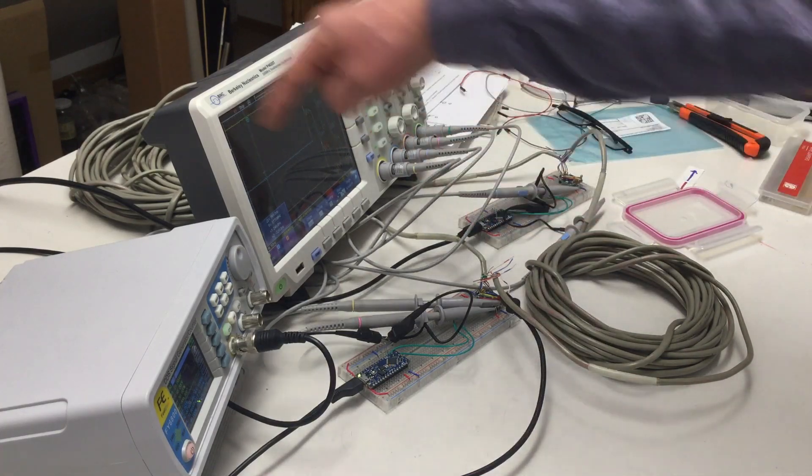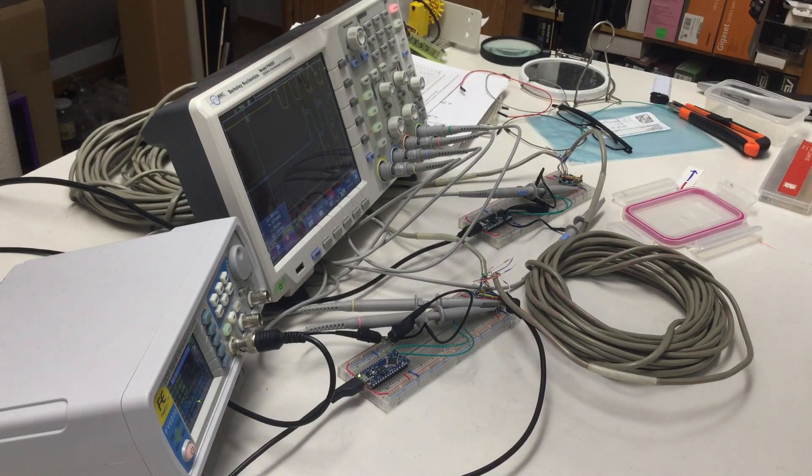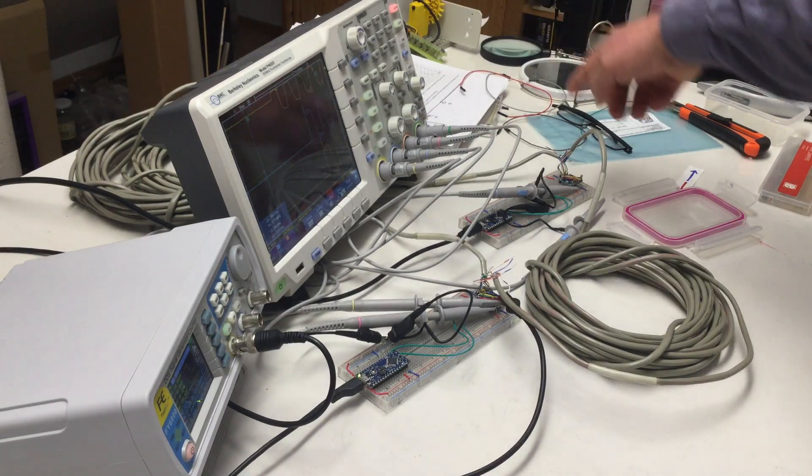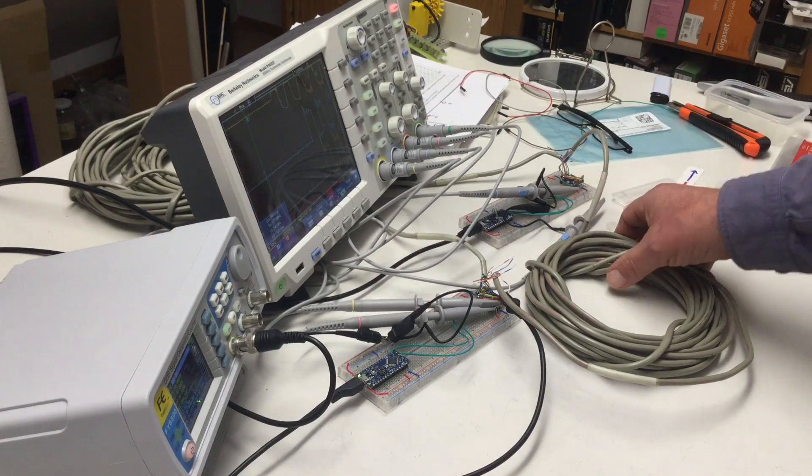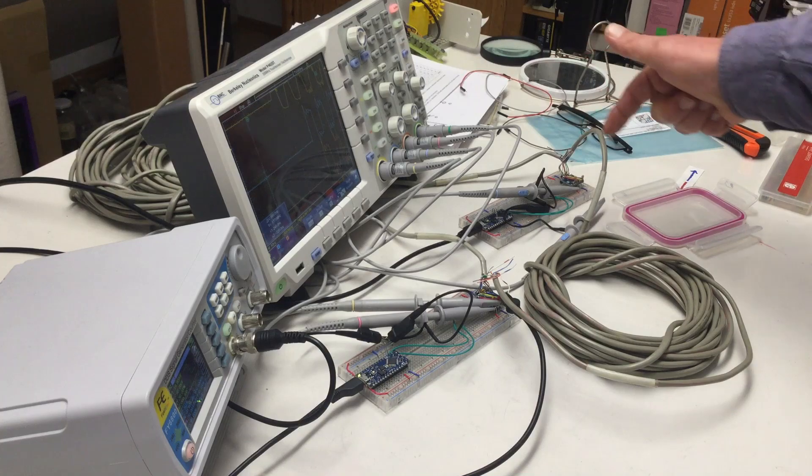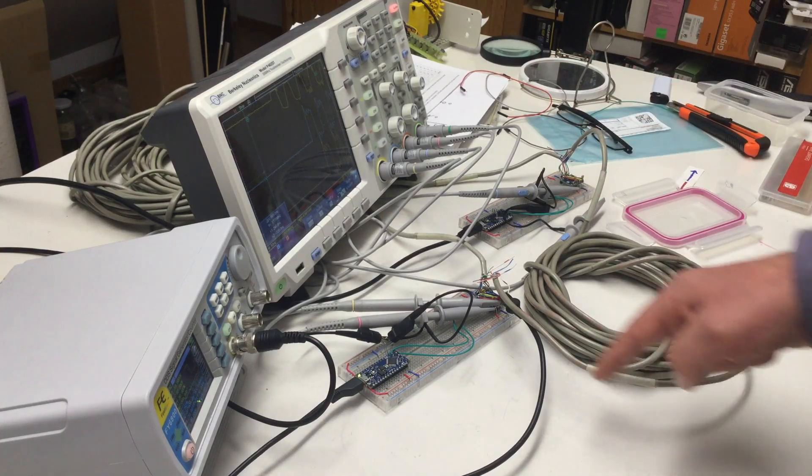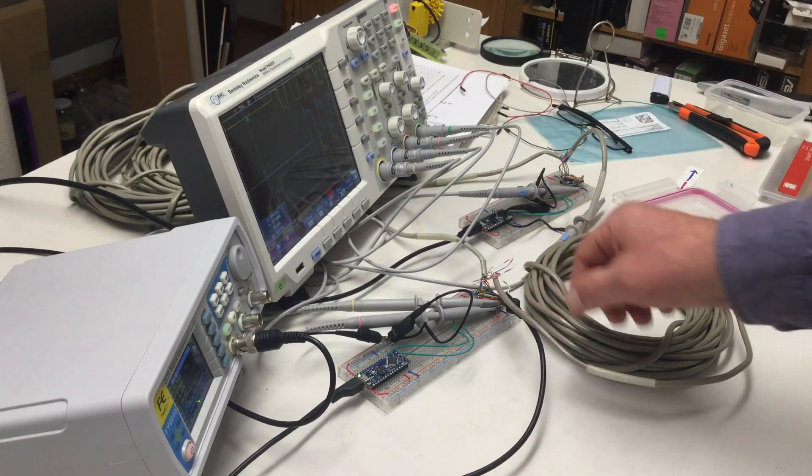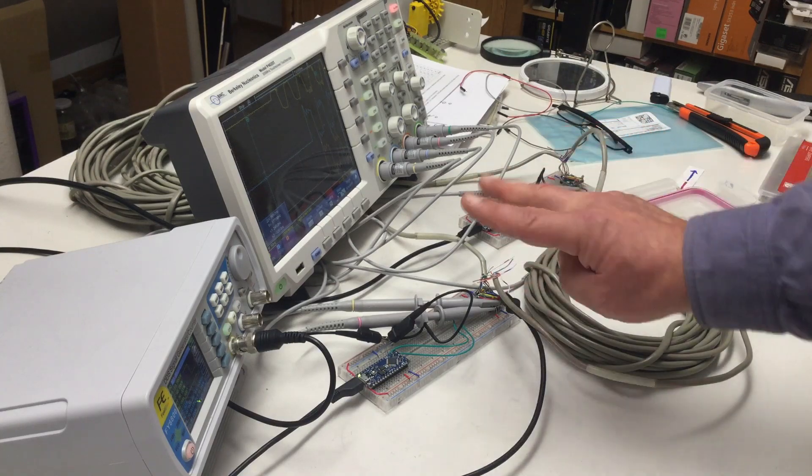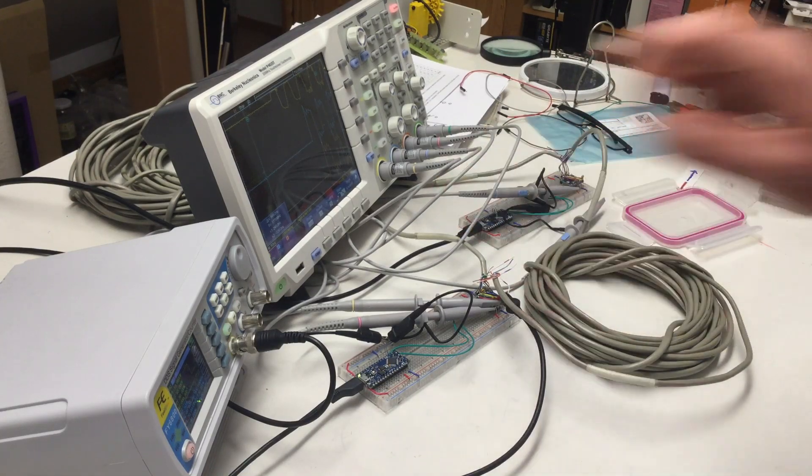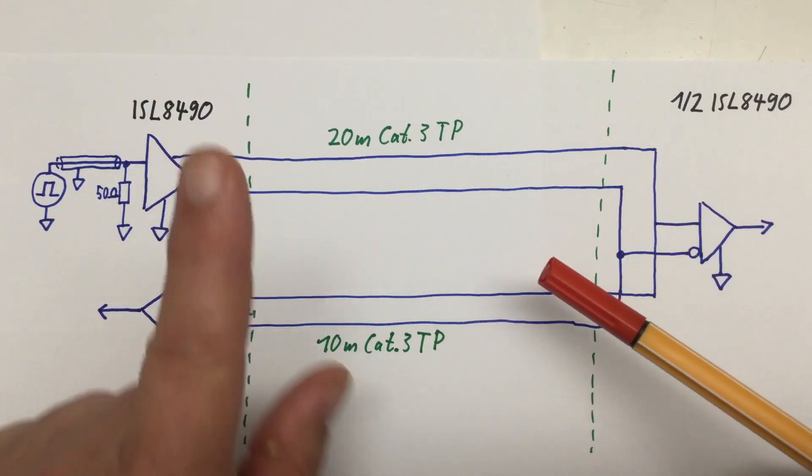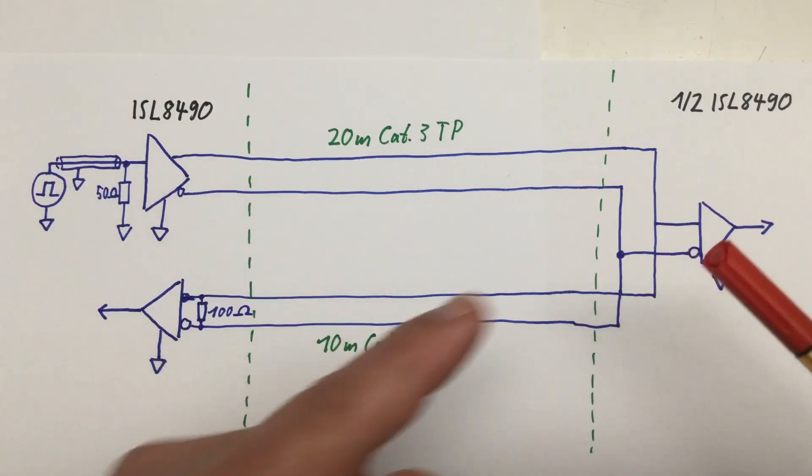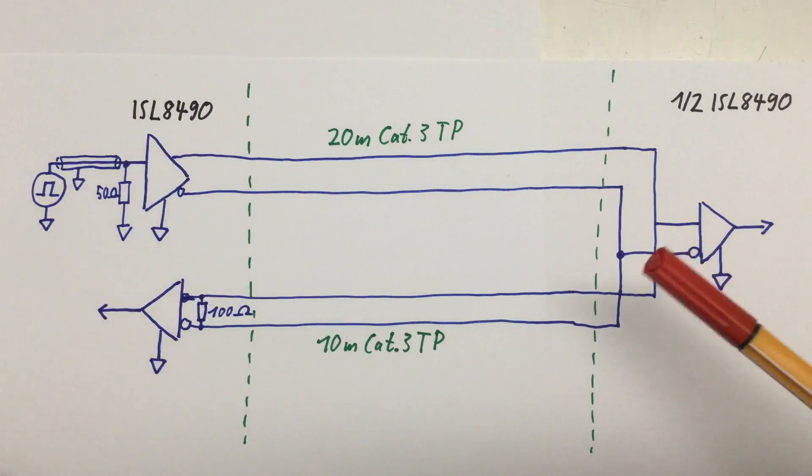So, a transmitter here on the left breadboard, sending its signal through a length of 20 meter twisted pair cable back there to a receiver here on the right breadboard, and then the new cable extends that signal line back to the left breadboard, where it goes into a second receiver.